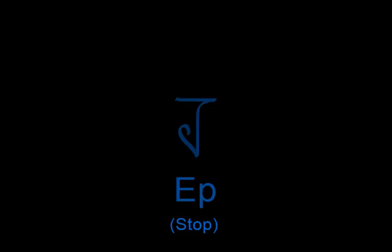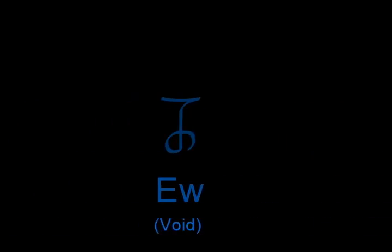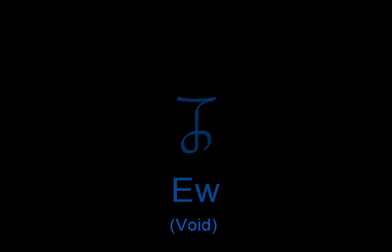Next is the letter Ep, which means stop and is used in words to describe a result, termination, quitting, and the ending of an event. After that is the letter Ev, which means future and is used in words to describe the part of an event that is going to happen, the time after a specific point, and the intent to perform an action. And finally, the letter Ew, which means void and is used in words to describe events that are going to happen, mysteries, questions, and the direction time moves in.